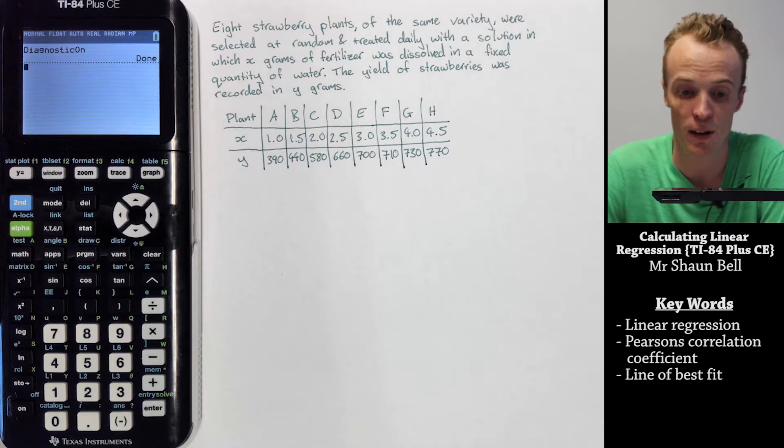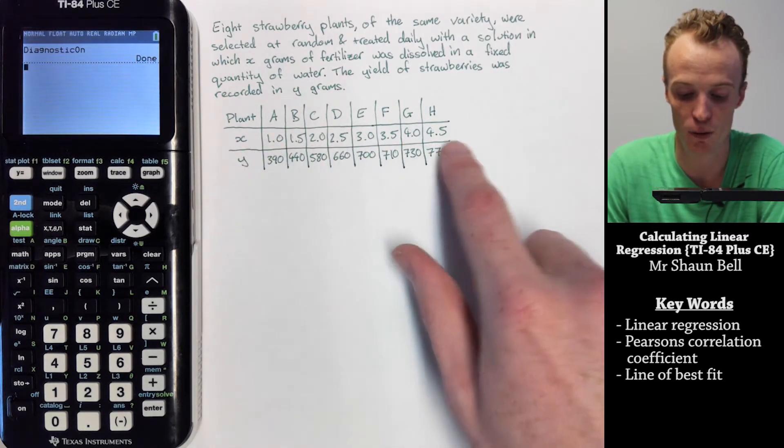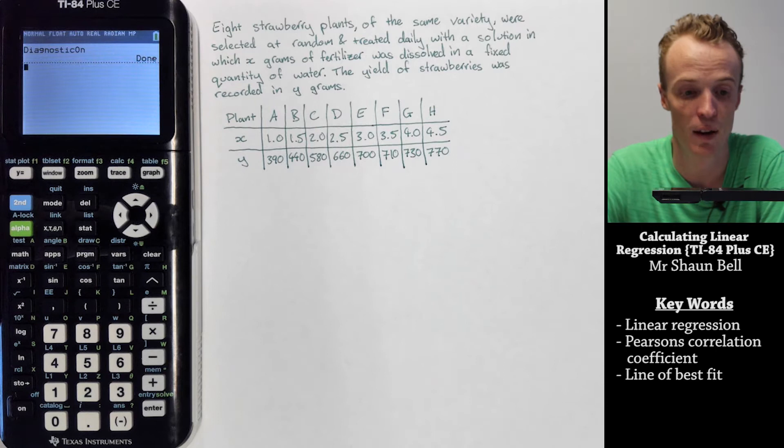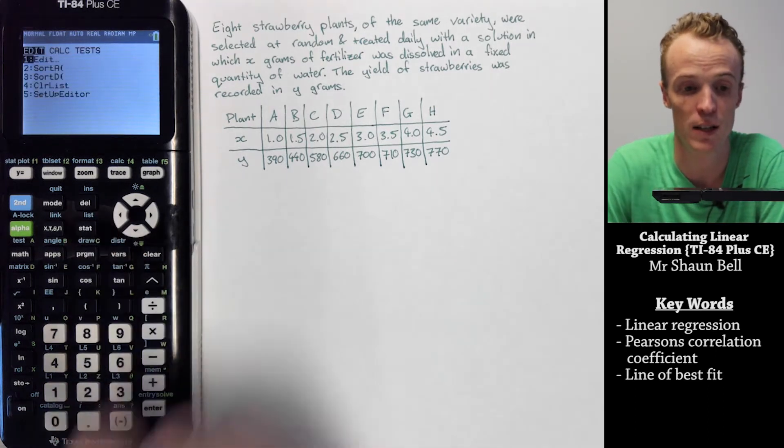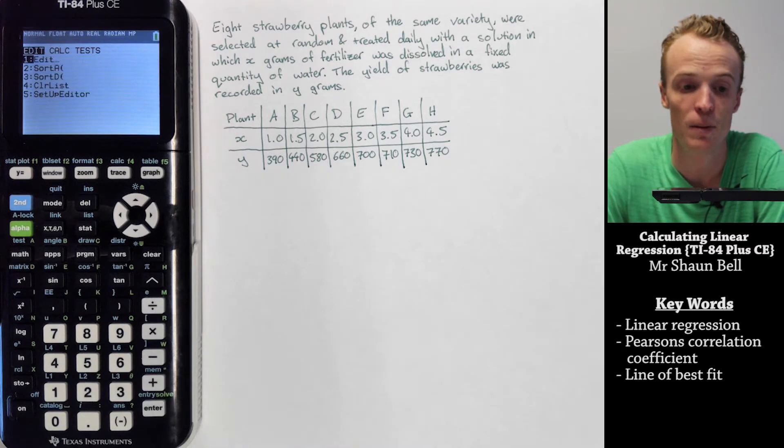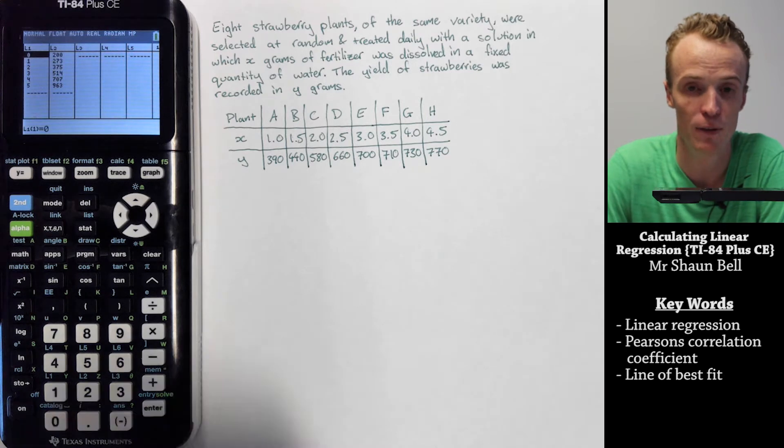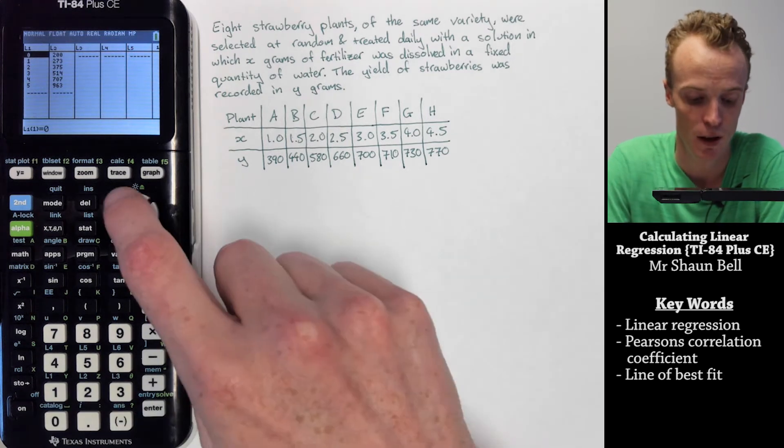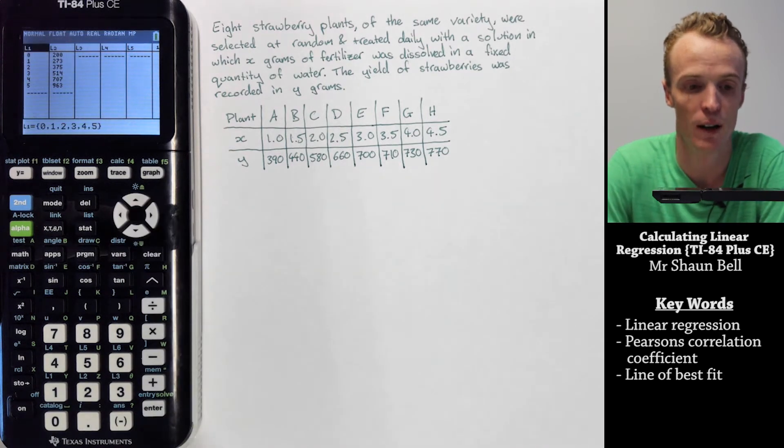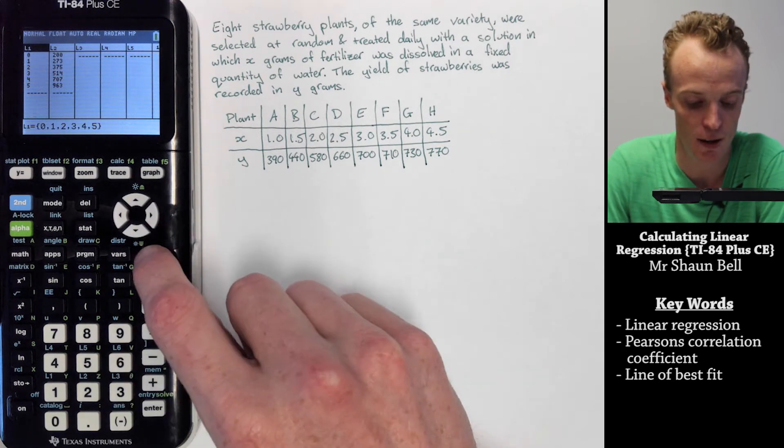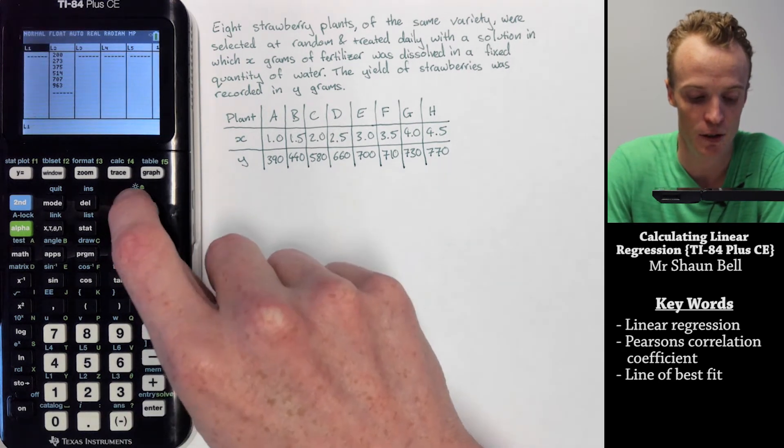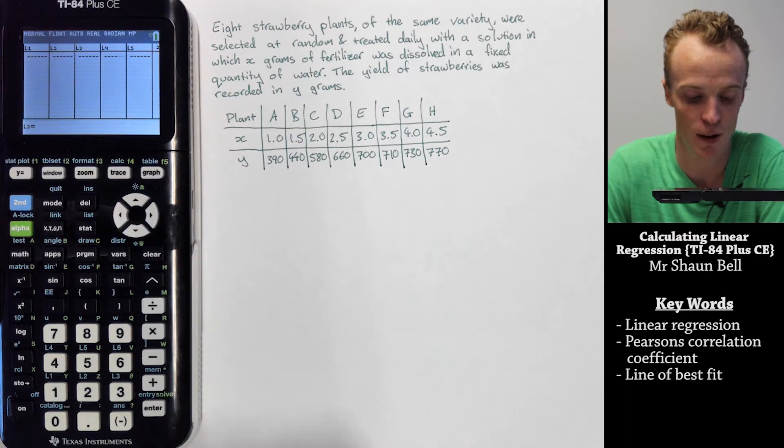I'm going to start by recording the x quantities as a list into my calculator. To bring up that list, I go to the stat button and choose edit. If you've got numbers already in the list, use your direction arrows to highlight the top of the list and hit clear then enter. Do that for any list you no longer wish to have.